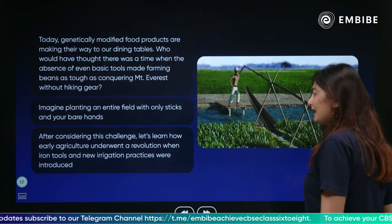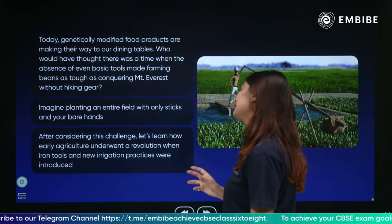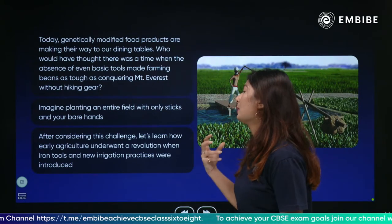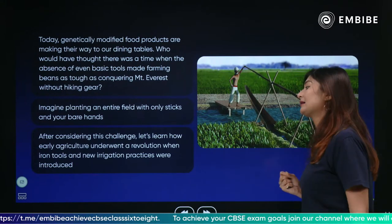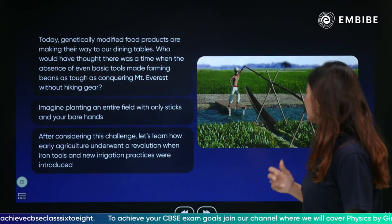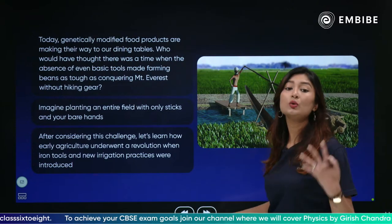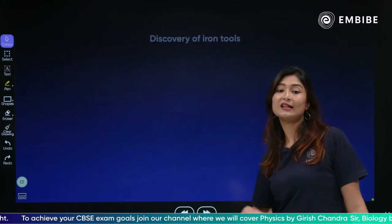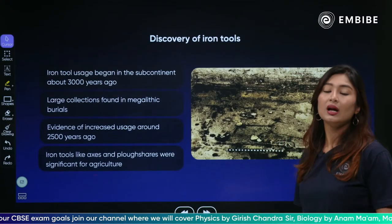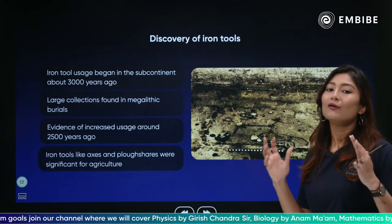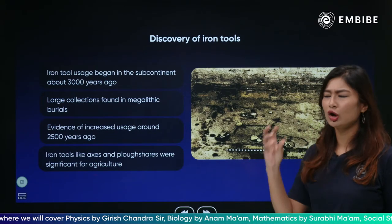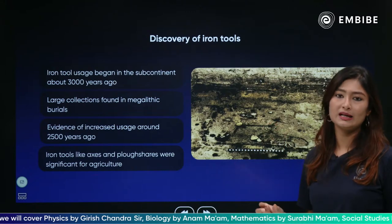After considering this challenge, let's learn how early agriculture actually underwent a revolution when new iron tools and new irrigation practices were introduced. When the old system used to exist and the new ones started coming in, the changes and developments shifted the whole system. We will understand how it was before and after, and how the concept of urbanization came in.